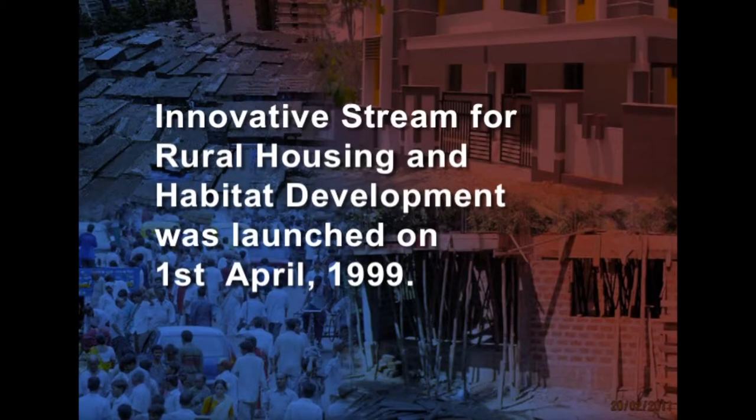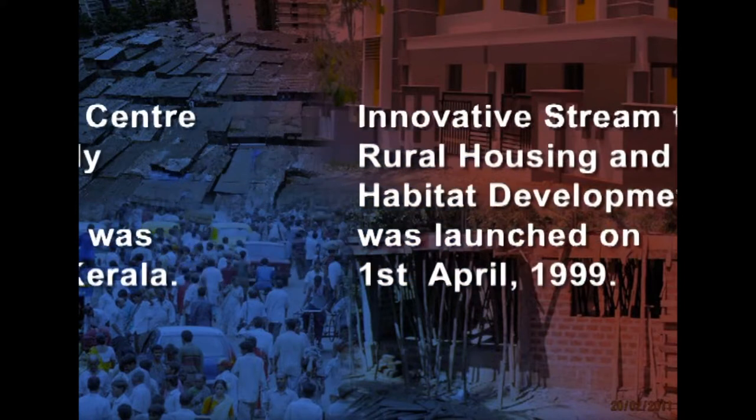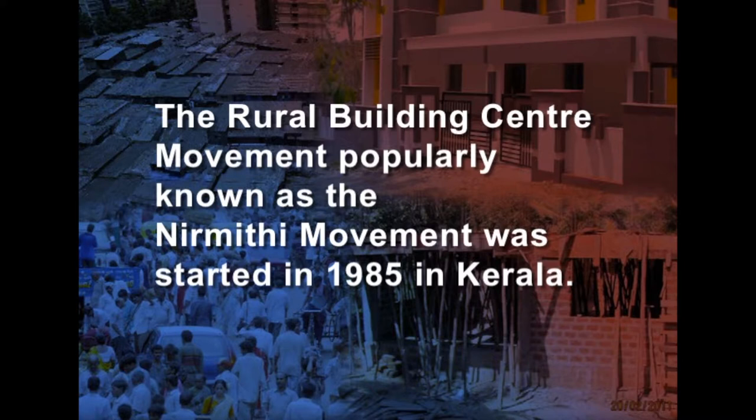The government also implements an innovative stream of schemes for rural housing and habitat development, to encourage the use of cost-effective, environment-friendly, scientifically tested, and proven indigenous and modern designs, technologies and materials — a scheme called the Innovative Stream for Rural Housing and Habitat Development, launched on 1st April 1999. The Rural Building Centre Movement, popularly known as the Nirmithi Movement, was started in 1985 in Kerala, with a view to promote technology transfer, information dissemination, skill upgradation through training, and production of cost-effective and environment-friendly building components.